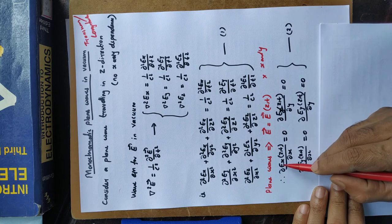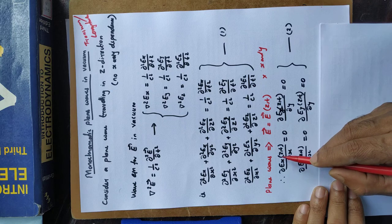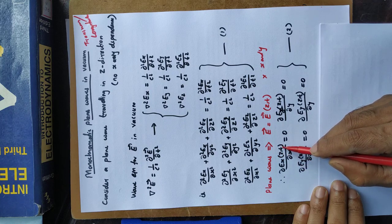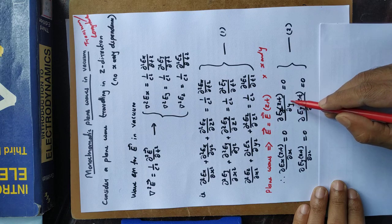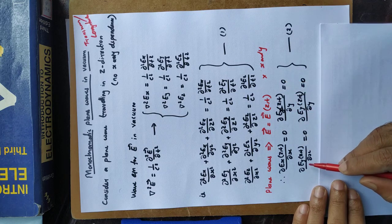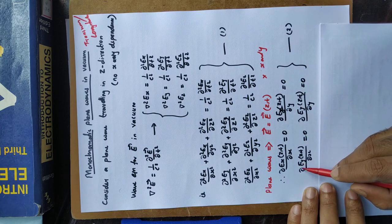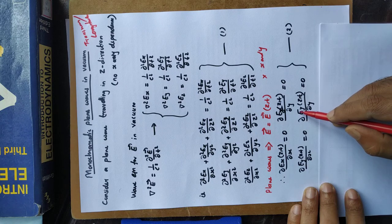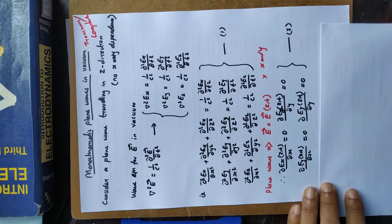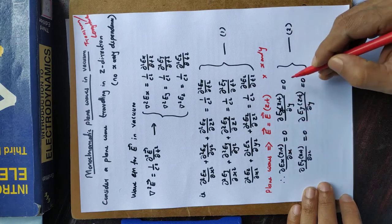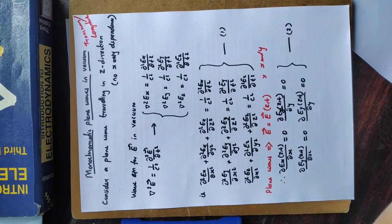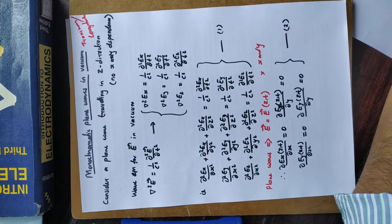Since the field components are functions of z and time only, the derivative with respect to x is zero, and the derivative with respect to y is also zero. Similarly for the y component: derivative with respect to x equals zero, derivative with respect to y equals zero. For plane waves, these restrictions are given by equation two.